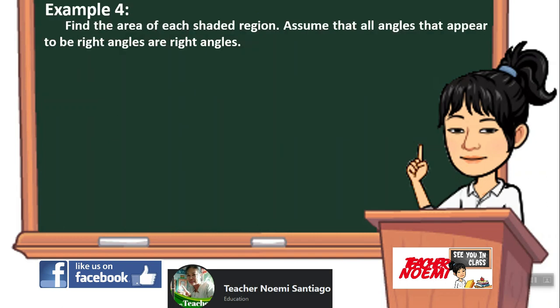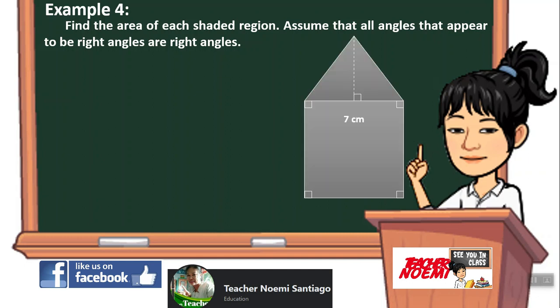Example number 4: Find the area of each shaded region. Assume that all angles that appear to be right angles are right angles. We can separate the figures into a triangle and a square. Now let us find the area of each figure.